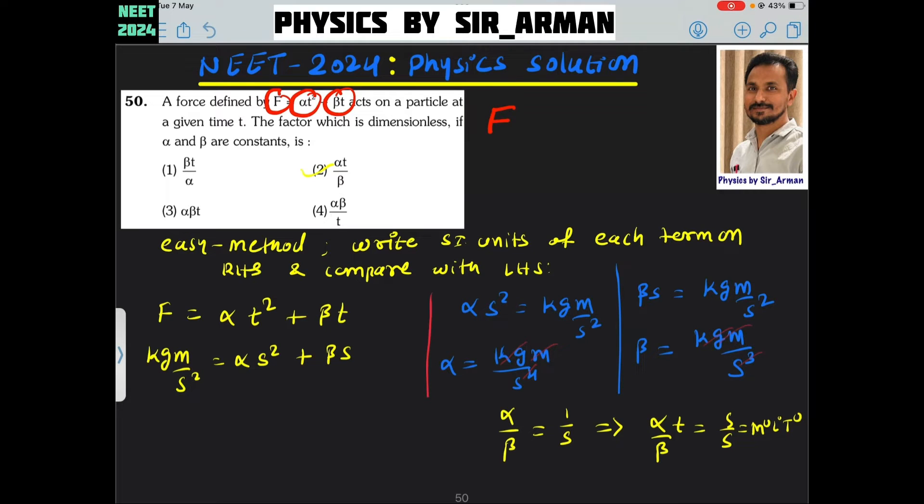Means here on the LHS side we have force. So alpha into T square has the same dimension as that of force. Similarly, beta into T has the same dimensions as that of force.